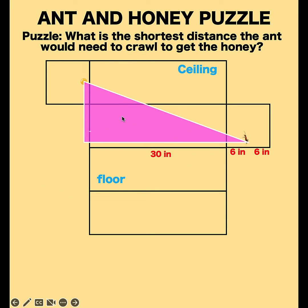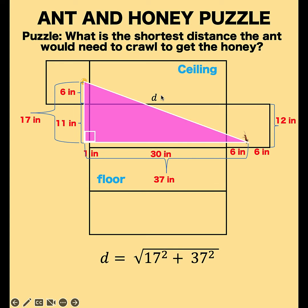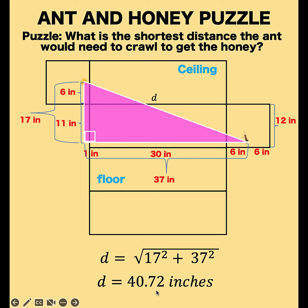We are looking at this right triangle again. The distance of the honey to the top is 1 inch, but this is now sideways because of the way we opened the box. The base of this right triangle is 1 plus 30 plus 6, which is 37 inches. For the height, this is 6 inches, and since the full height is 12 inches and the ant is located 1 inch above the bottom, the remaining distance is 11 inches, giving us a triangle height of 17 inches. Solving for D: D equals the square root of 17 squared plus 37 squared, which gives D equals 40.72 inches.